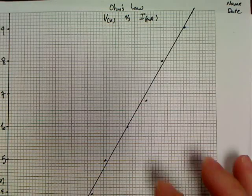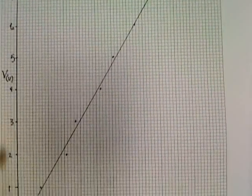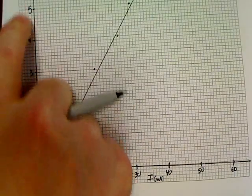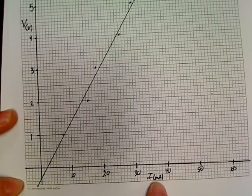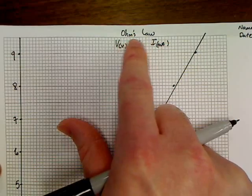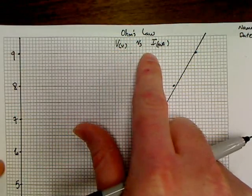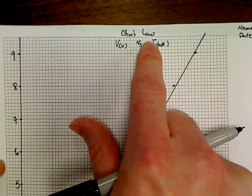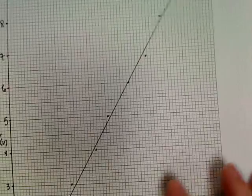Where this video begins, you should already have a graph made. It should look something like this. Volts on V on the left, and current in milliamps going this way. You should already have a title at the top — I call it Ohm's Law. Underneath it, we've got volts or potential in volts versus current in milliamps. This is our graph, with name and date over in the corner.